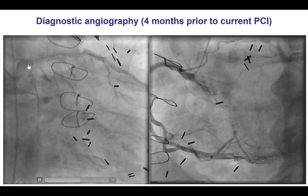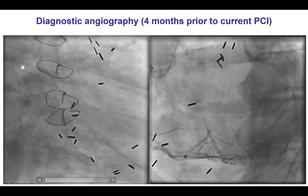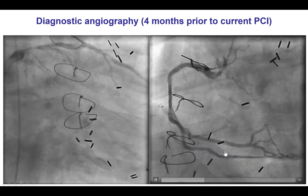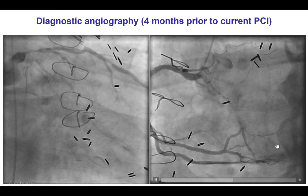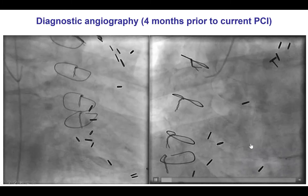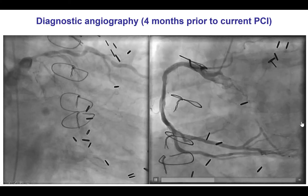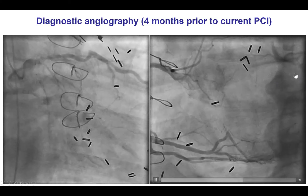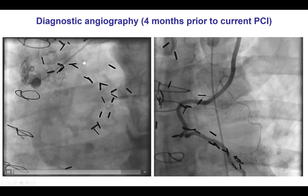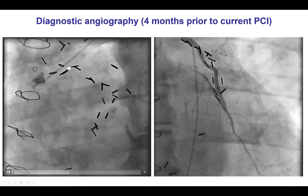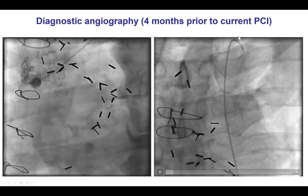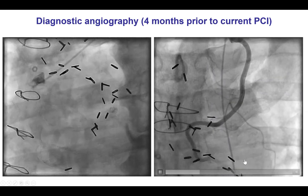He did have an ostial occlusion of the circumflex. The right coronary artery was patent with previously placed stents and it did provide some epicardial collaterals into the circumflex. However, those collaterals were small, tortuous, and were linking to the circumflex near the proximal and distal cap. There was an occlusion of the saphenous vein graft to the diagonal branch, and the LIMA as expected was in good shape and was supplying the mid-left anterior descending artery.